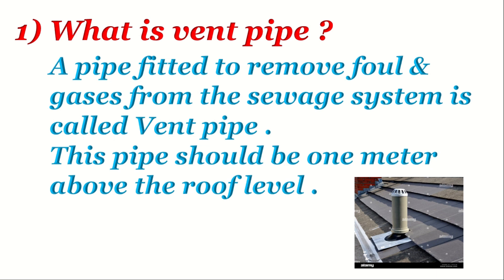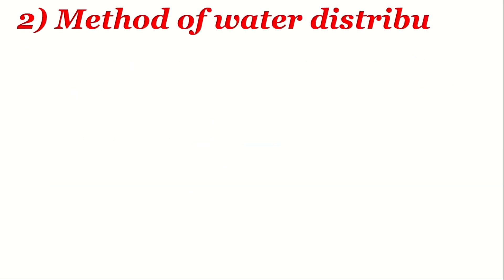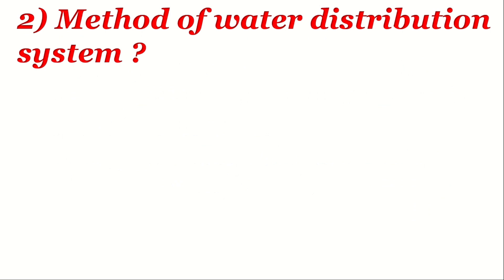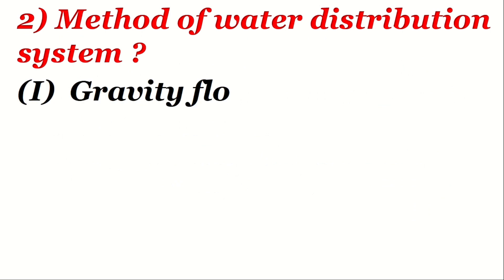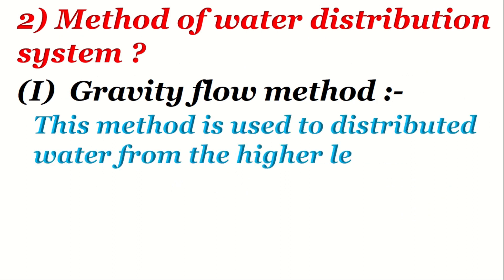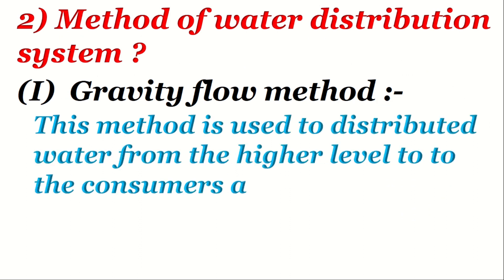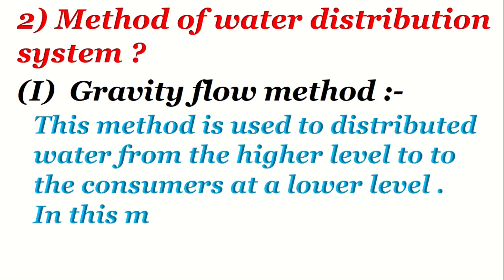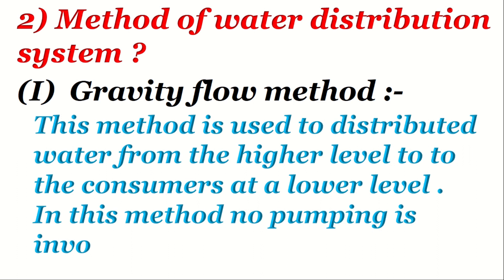Method 2: Water distribution system. Gravity flow method — this method is used to distribute water from a higher level to consumers at a lower level. In this method, no pumping is involved.